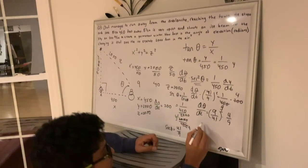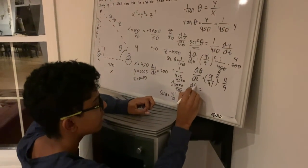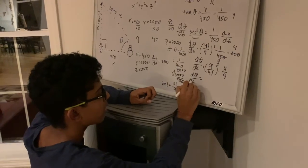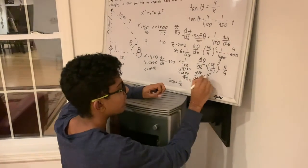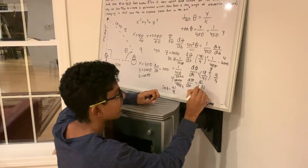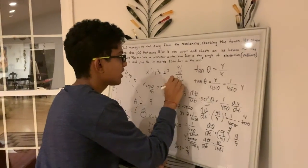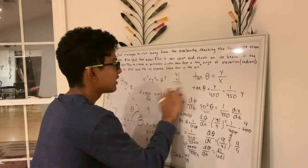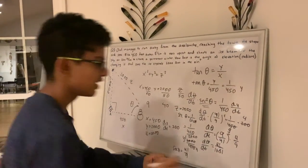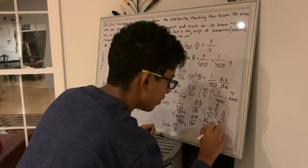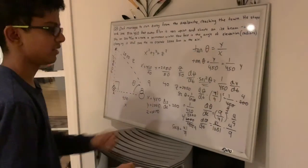So 9 over 41 squared, it is actually, if I am not mistaken, 81 over 1681. Let me just quickly check. Yes, 81 over 1681 times 4 over 9.